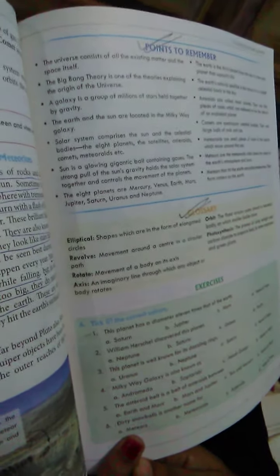The 8 planets are Mercury, Venus, Earth, Mars, Jupiter, Saturn, Uranus and Neptune.